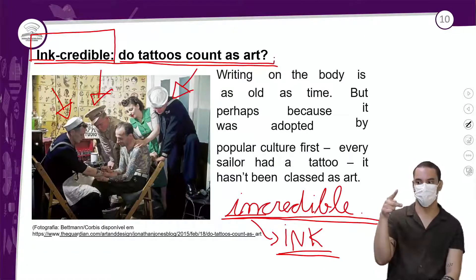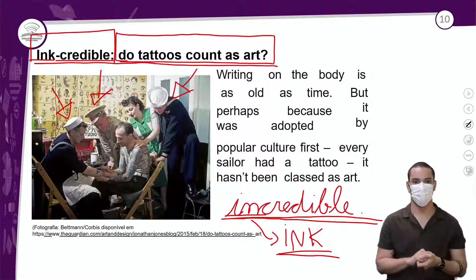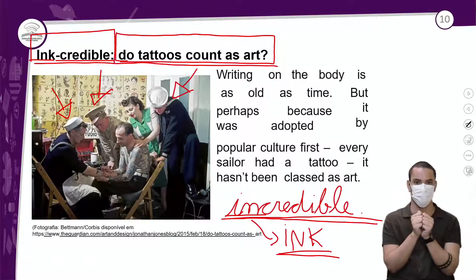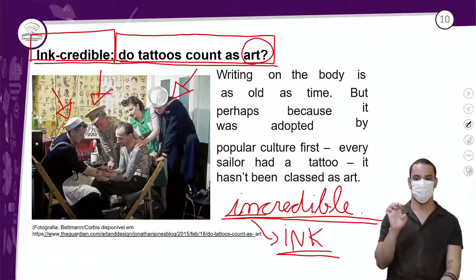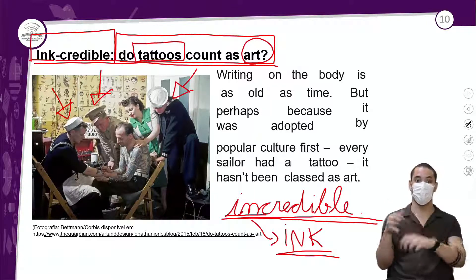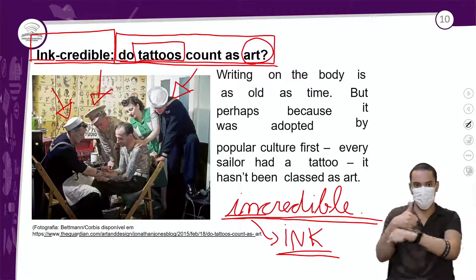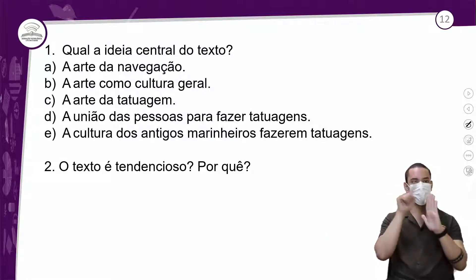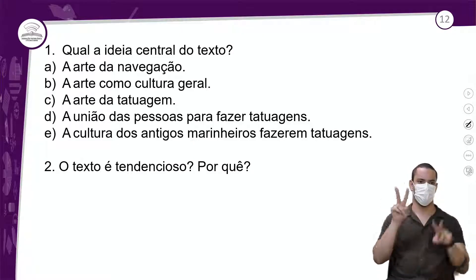Nós temos dois pontos e uma pergunta, que pode nos ajudar a responder a atividade. Eu já vejo que tenho duas palavras aqui que são cognatos. A primeira é ART, que significa ARTE, e a segunda é TATTOOS, que significa TATUAGEM. Então eu tenho: tatuagem, arte, informação visual de uma pessoa tatuada e tatuando outra, pessoas vestidas de marinheiros. Eu já tenho informações antes de ler o texto. Qual a ideia central do texto? Eu nem preciso ler muito texto, dependendo se a informação visual e o título já me ajudaram.